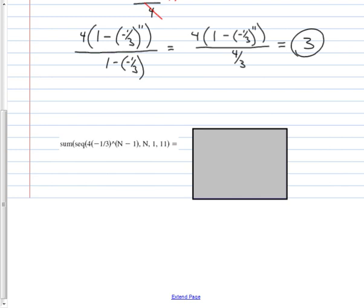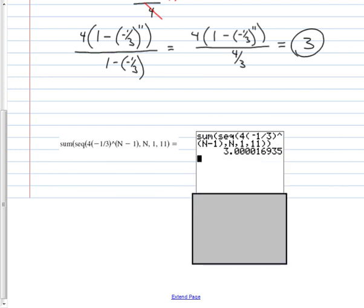The sum of the sequence where, here's the term, four, a sub one, common ratio, raised to the n minus one, it is a variable, start at one, stop at 11. It is not quite three.